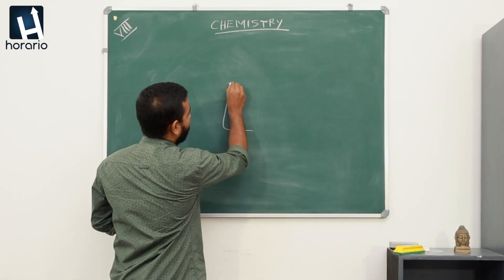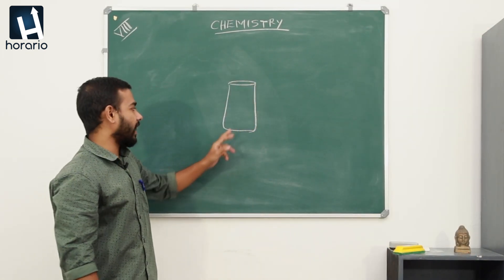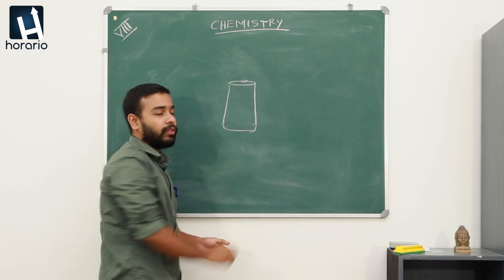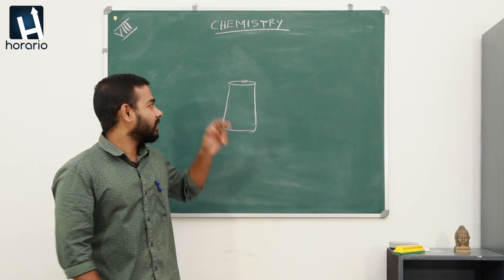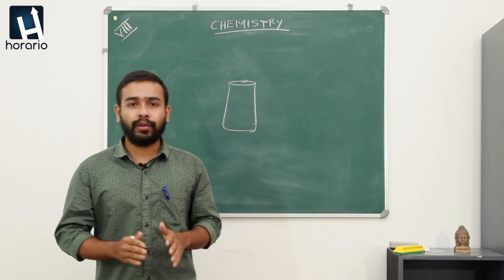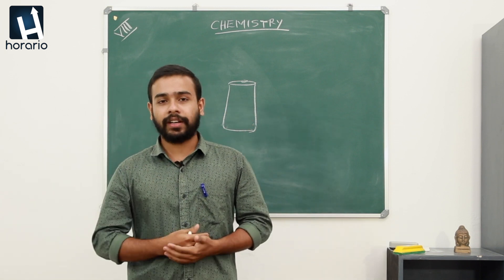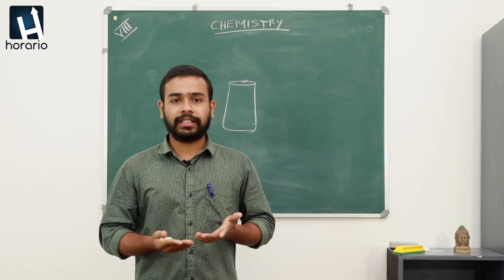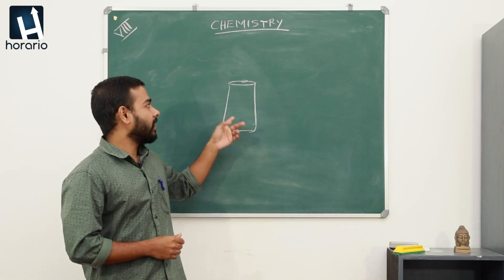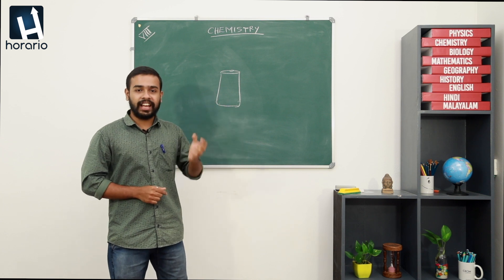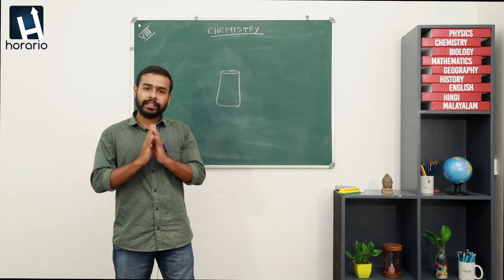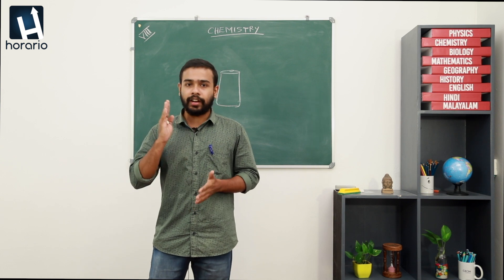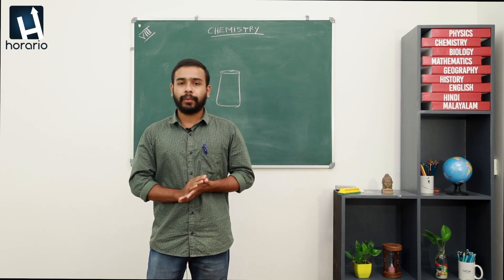Let this be a jaggery. If you taste this jaggery from this portion, or this portion, or the top portion, you will get the same taste. Why is this happening? Because this jaggery is made up of a large number of tiny particles. We cannot see those particles with our naked eye. These particles are identical in their shape, size, and other properties like taste. That is why it tastes the same sweetness everywhere.